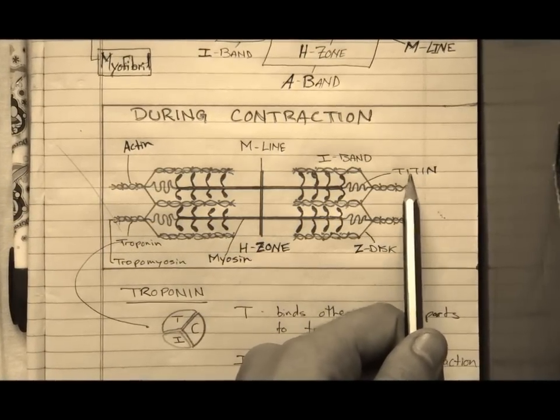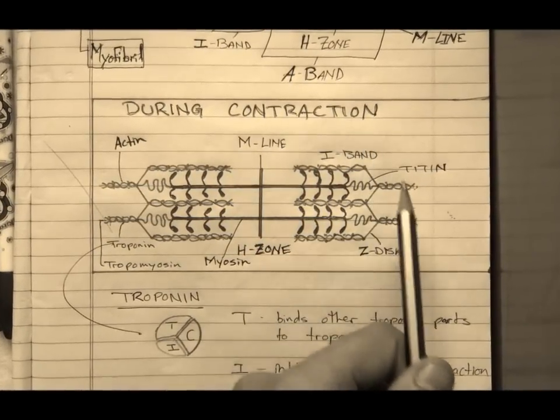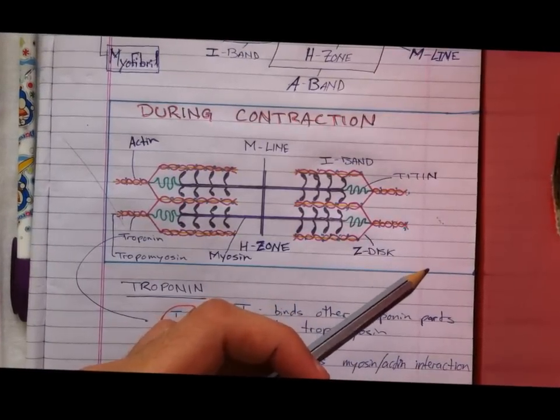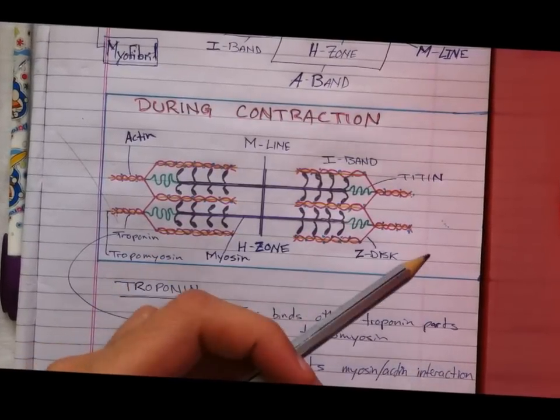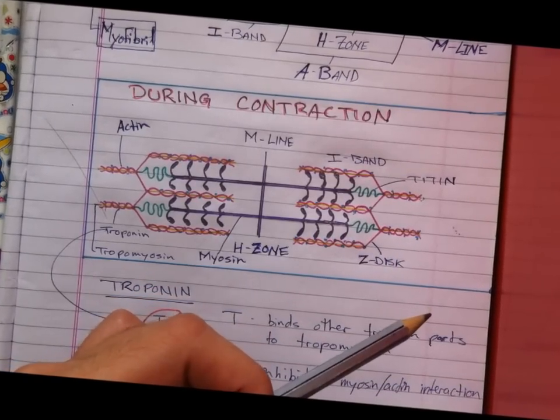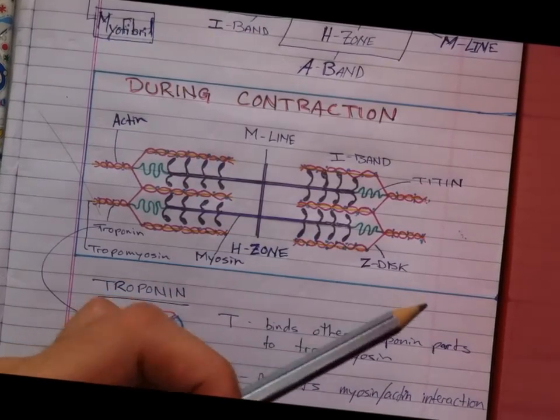Similarly, actinin is a muscle protein which binds the Z-line to actin, and desmin is another muscle protein which binds the Z-lines to the cell membrane.